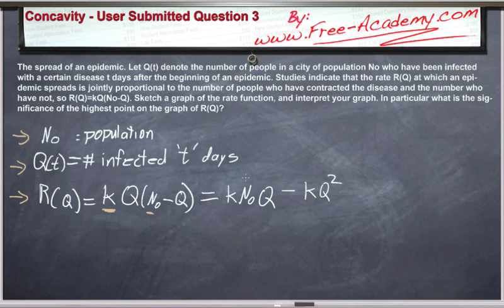This is going to be a similar procedure that we've done with the rest of our concavity problems. We need to find the first derivative and set it equal to zero to find the critical points, and then find the second derivative set equal to zero to find the inflection points.